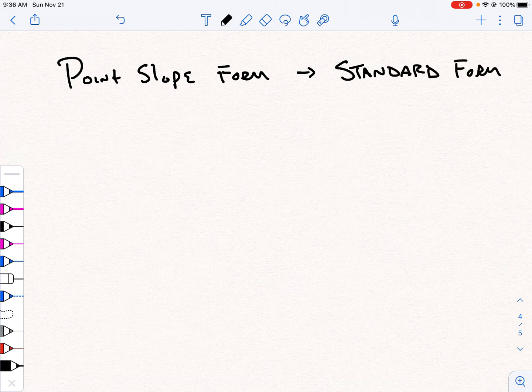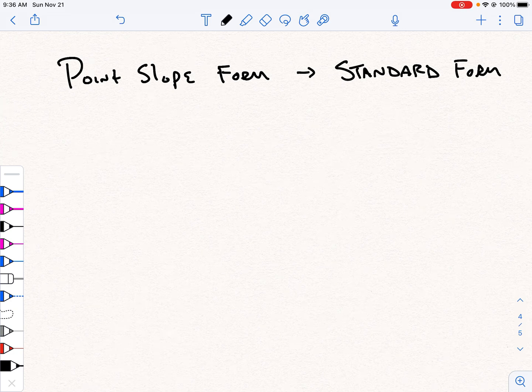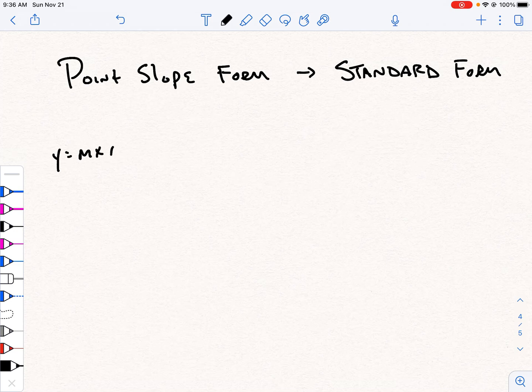Now, there are three general types of equations that we use for linear functions. We use slope-intercept form, which is y equals mx plus b. It's probably the first one you would learn. We're not going to address that here.